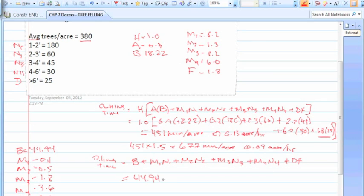So 44.94 plus 0.1 times 180. Of course, the number of trees is still the same, so we're still going to use these guys up here: 0.5 times 60, 1.8 times 45, 3.6 times 30, 0.9 times 25. So go ahead and do the math on that one. Plug that sucker in, you get about 304.4 minutes per acre, or 0.2 acres per hour.